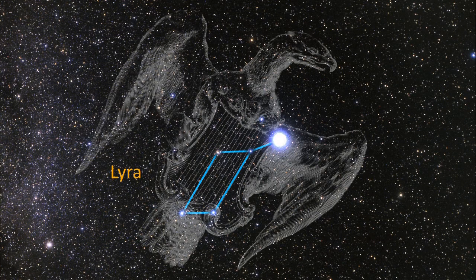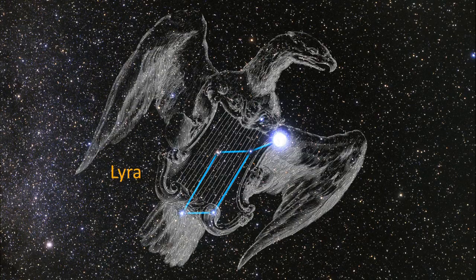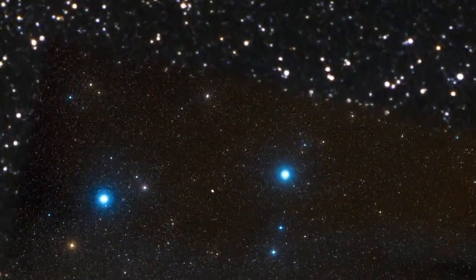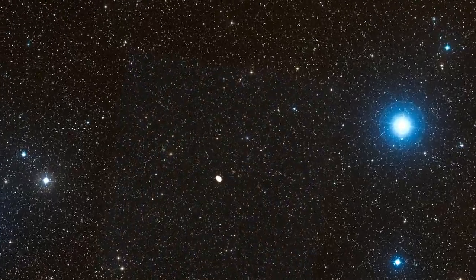The iconic ring nebula lies in the summer constellation Lyra. This glowing ring of gas is the result of the death of a sun-like star.